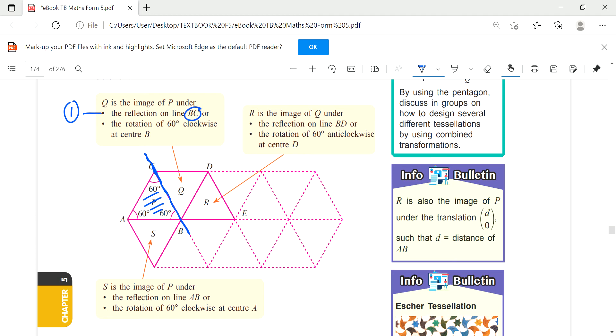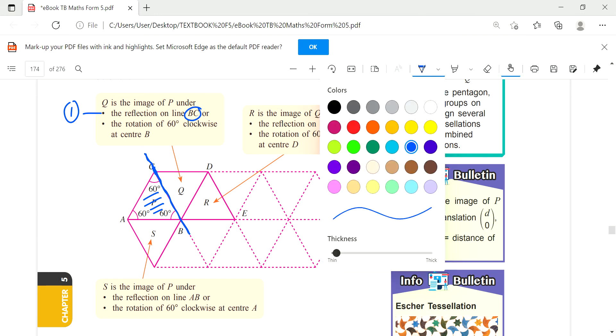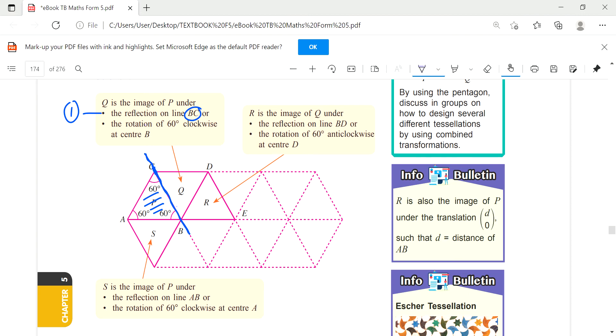And also it is - I use this color, purple - it is actually a rotation. Rotation of 60 degrees because if you see here AB, it rotates here, it becomes here. So it is 60 degrees clockwise, center is here B.